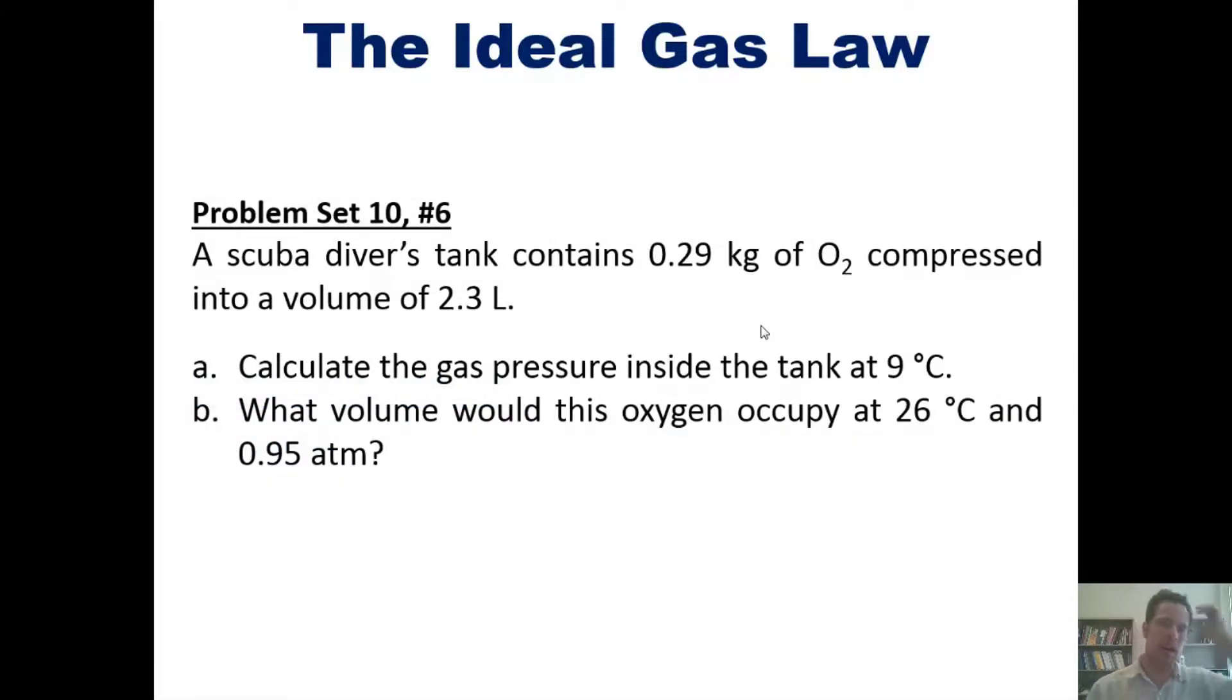In this question, a scuba diver's tank contains 0.29 kilograms of O2 compressed into a volume of 2.3 liters. Calculate the gas pressure inside the tank at 9 degrees C. And what volume would this oxygen occupy at 26 degrees C and 0.95 atmospheres?